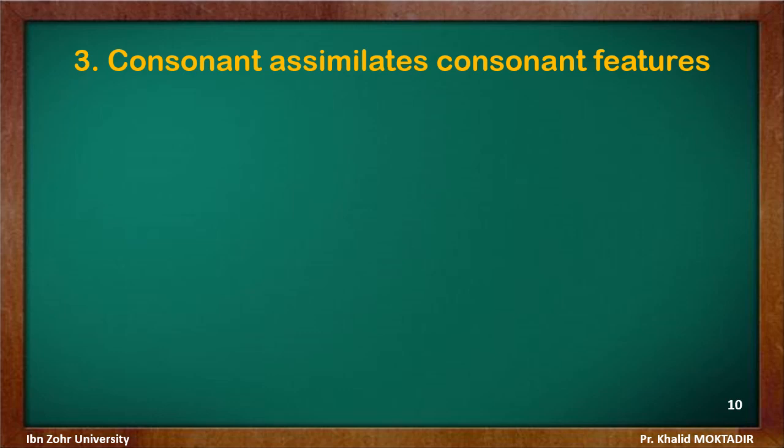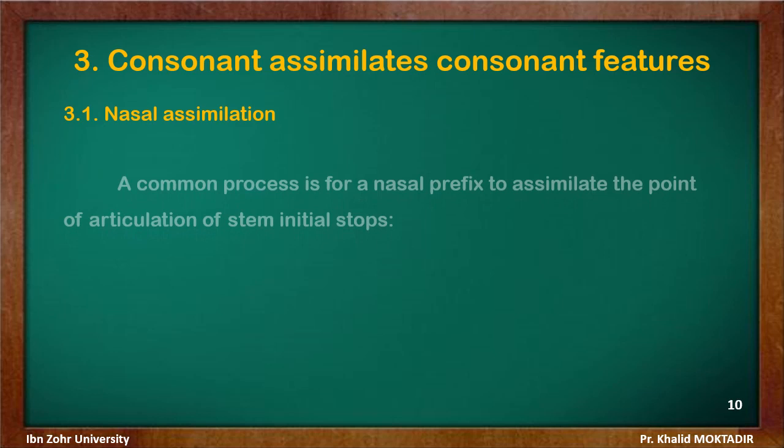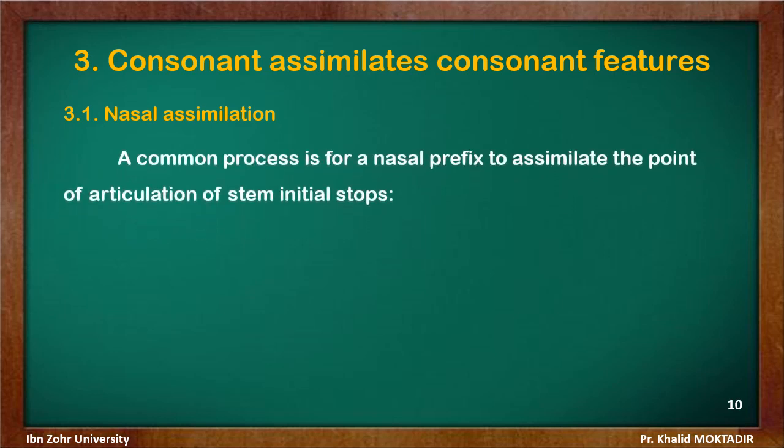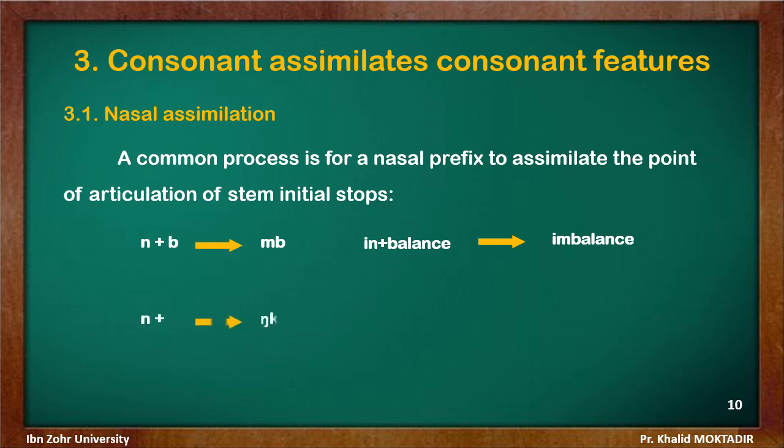We carry on with assimilation processes and move on to the third kind: how consonants assimilate other consonant features. We pick up nasal assimilation as one of the common processes. This involves a nasal prefix that assimilates the point of articulation of stem-initial stops — that is, the first stop of the stem influences the nasal prefix, which takes on its point of articulation. Look at the examples: N following B — alveolar following bilabial — and the nasal becomes bilabial: 'imbalance.'